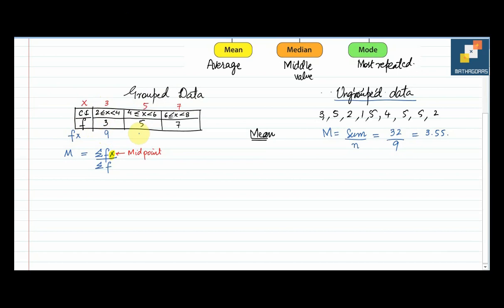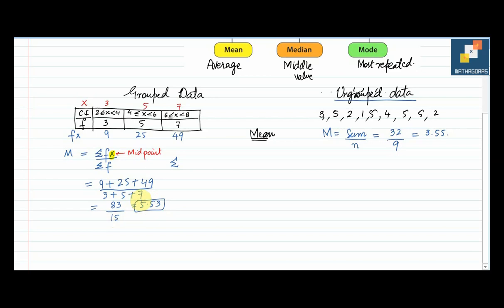fx means multiply frequency f by the midpoint. So: 3×3=9, 5×5=25, 7×7=49. Add them: 9+25+49=83. The summation of frequencies is 3+5+7=15. So 83 divided by 15 gives 5.53. That is how you find the mean of grouped data.